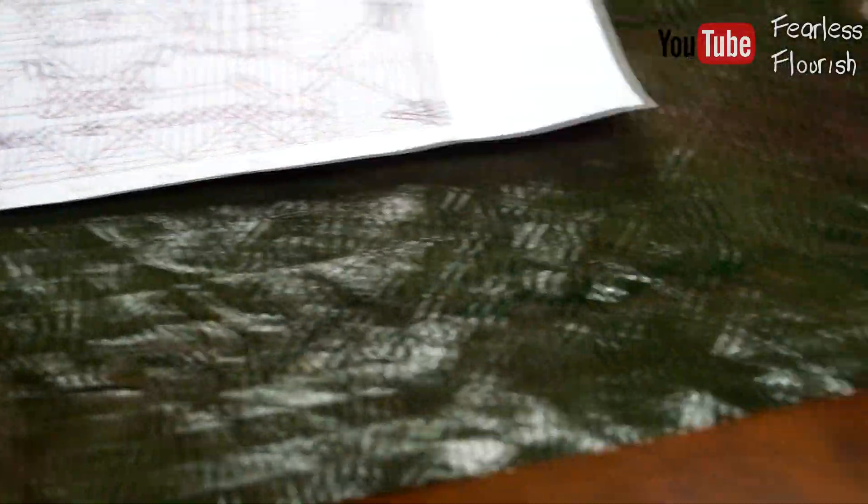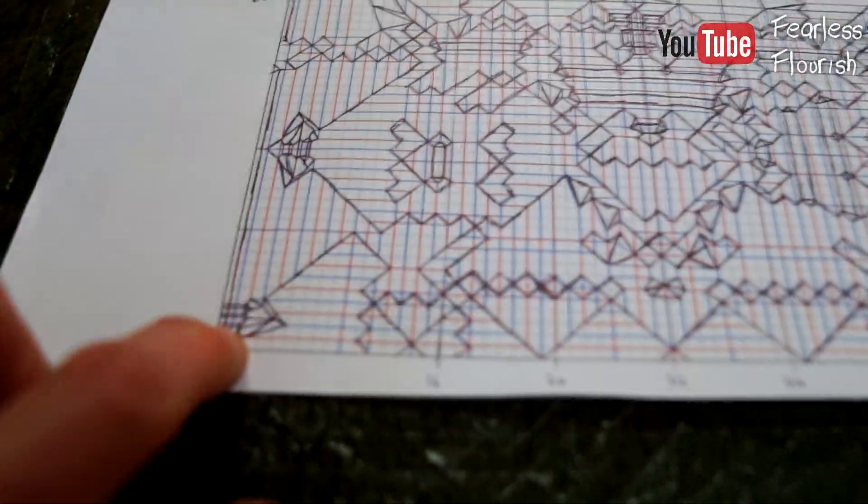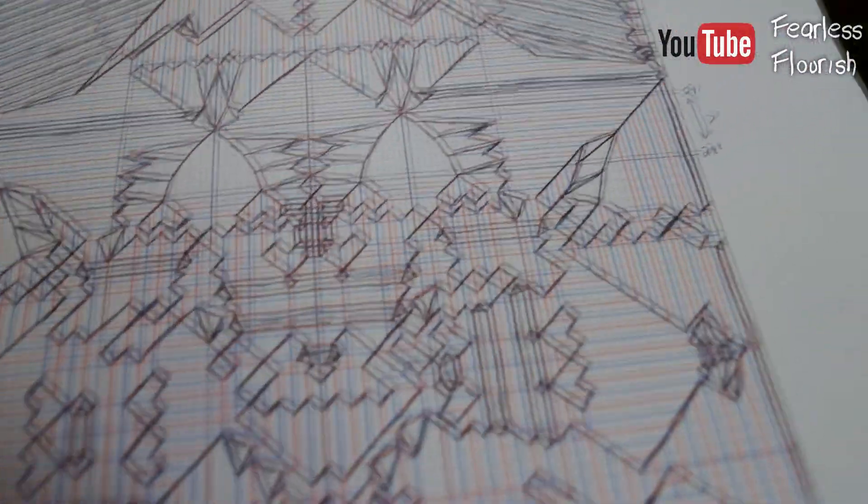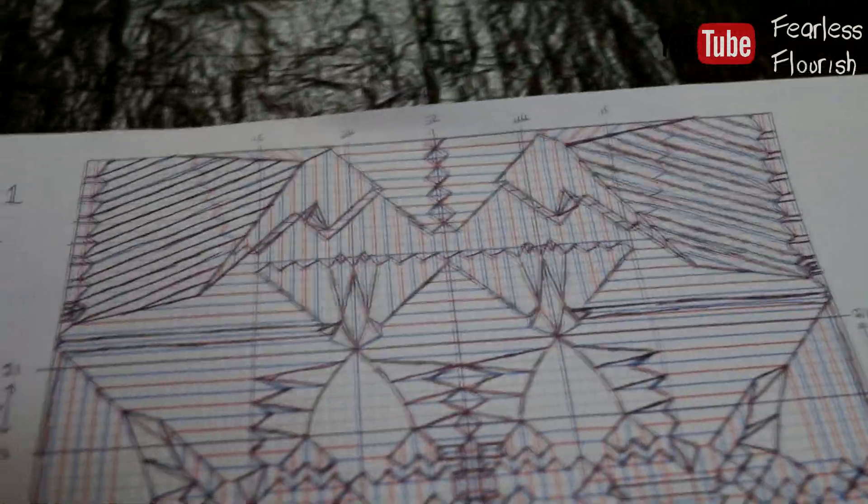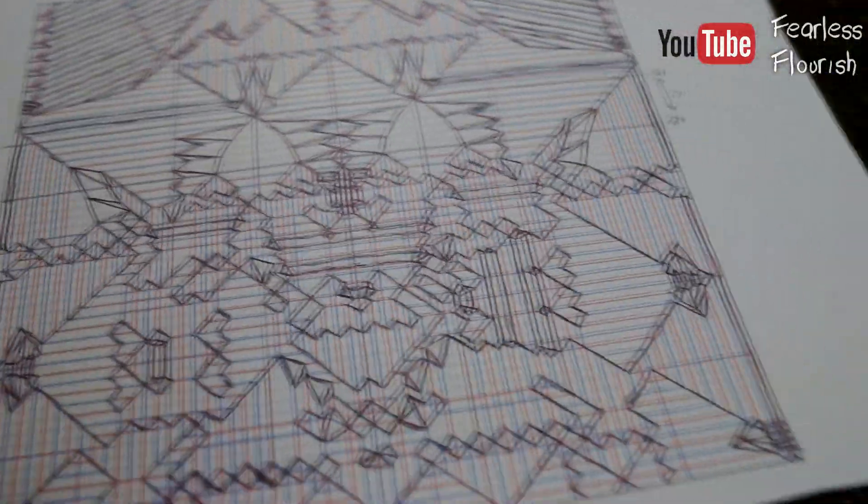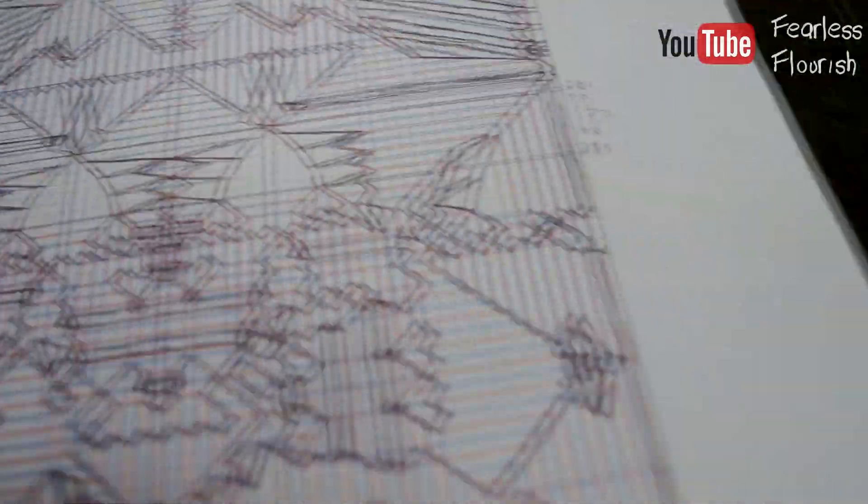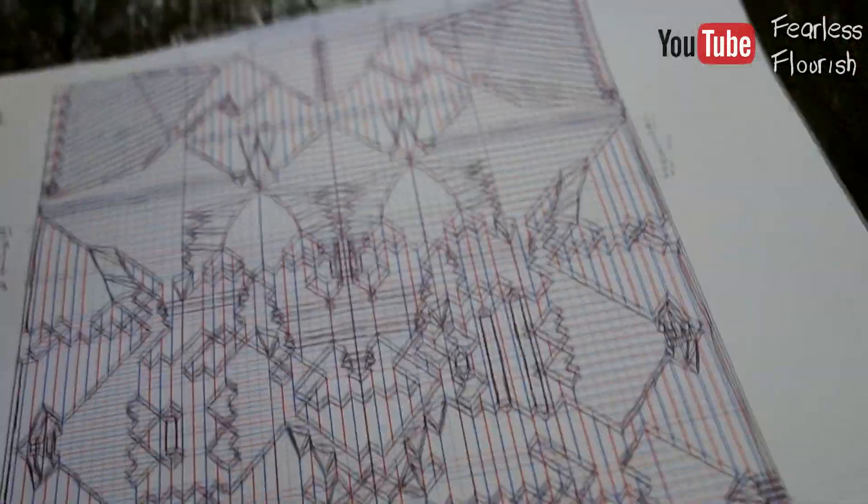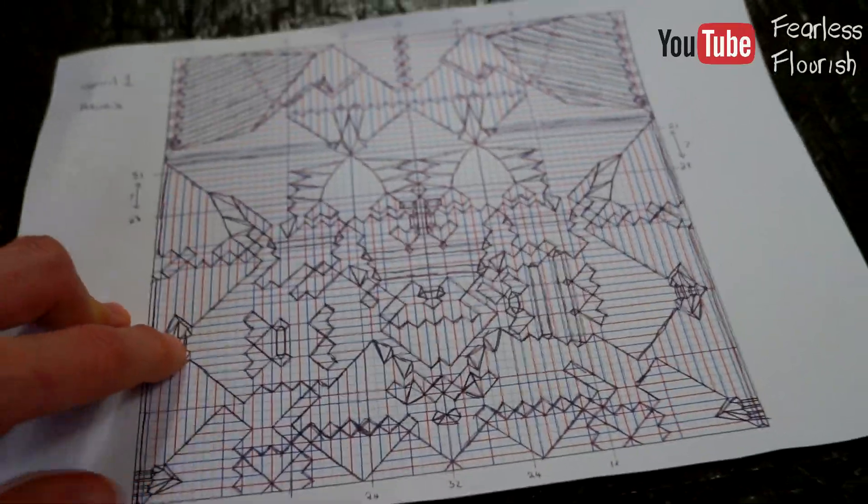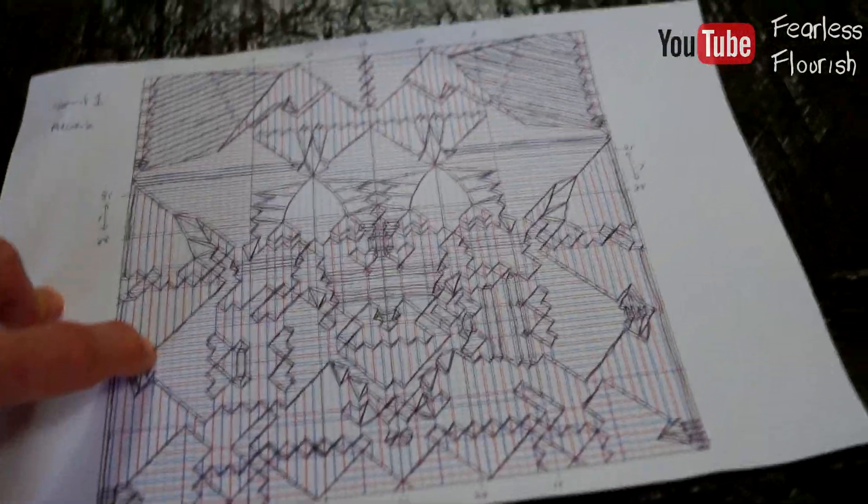Every time I make a crease, I mark it off. And I go through the whole crease pattern and make sure I've got every single crease needed to pre-crease. I've only got a few here left to do. These are the diagonals. I'll get those later on. So the first crease pattern is used for pre-creasing.